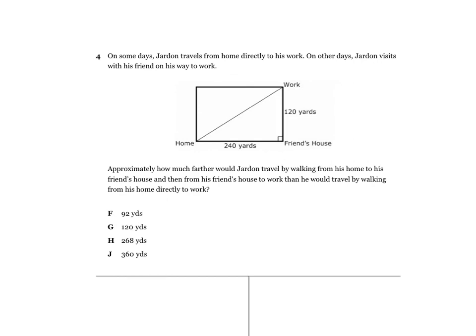Number 4: on some days, Jarden travels directly from home to work — this is going to be side c. On other days, Jarden visits his friend on his way to work, meaning he goes from home to his friend's house to work. We need to figure out approximately how much farther he travels by that route versus going directly to work. So we've got to solve for side c first using a squared plus b squared equals c squared.